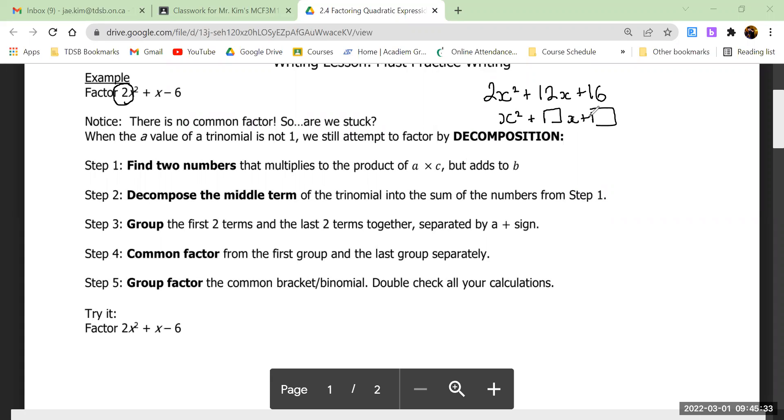What you forgot is that every single example that we did did not have a number in front of the x - it was actually a one. The question was, what could you do to this trinomial so that the x squared only has a one in front of it?